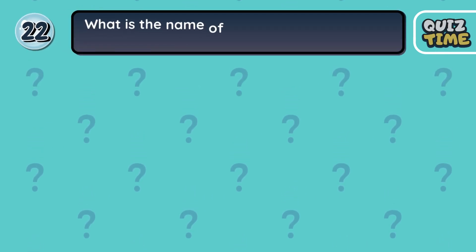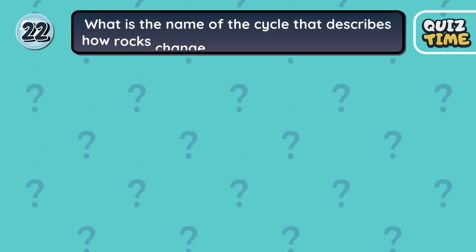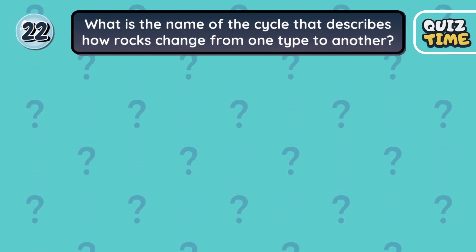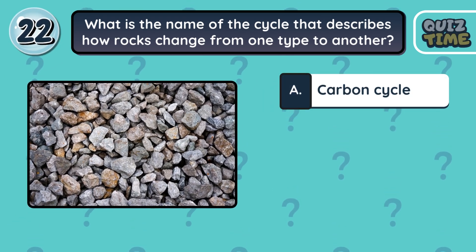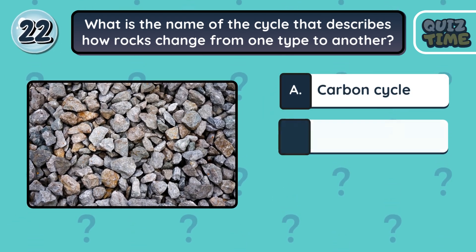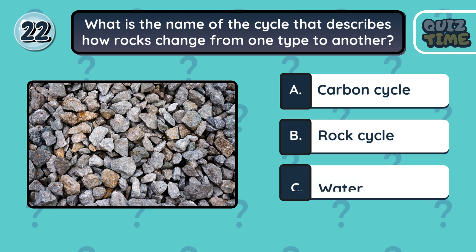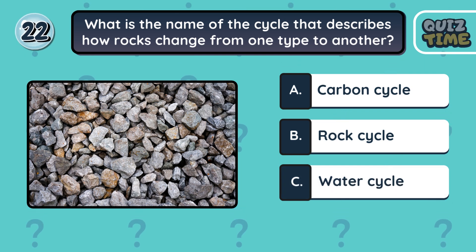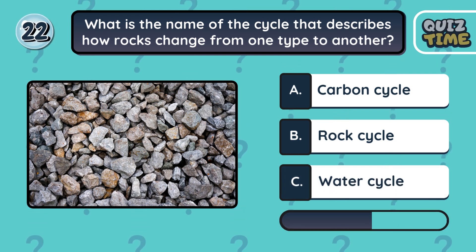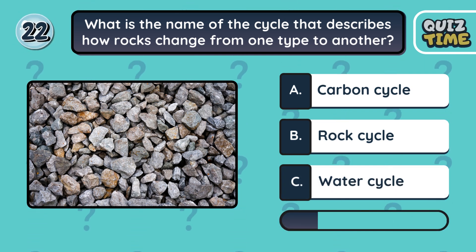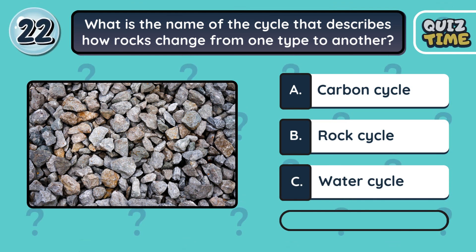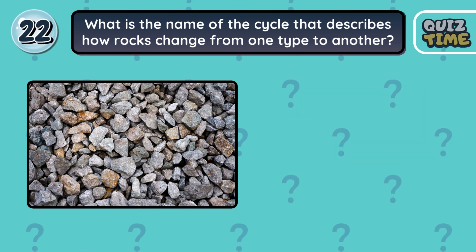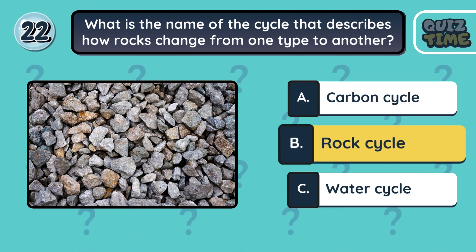Number 22. What is the name of the cycle that describes how rocks change from one type to another? A. Carbon cycle. B. Rock cycle. C. Water cycle. The correct answer is B. Rock cycle.